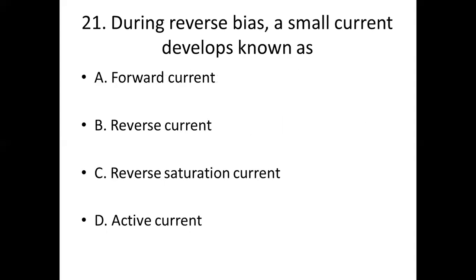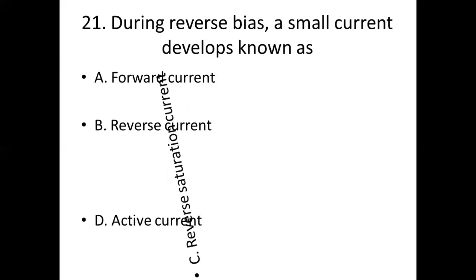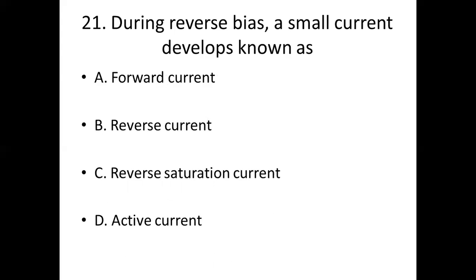Twenty-first one. During reverse bias, a small current develops known as dash. Option A: forward current. Option B: reverse current. Option C: reverse saturation current. Option D: active current. Answer: Option C, reverse saturation current.